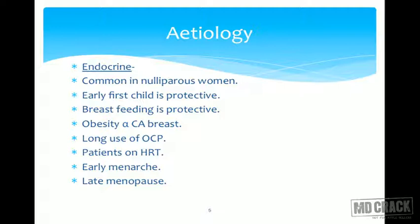CA breast is an endocrine and hormonal tumor, so understanding its endocrine background is very important. It affects nulliparous women more commonly. The correlation between menstrual history, reproductive history, and CA breast development is key. Women who bear children at a later age or breastfeed less are more at risk. Early childbirth — at age 18, 20, or 25 — is considered protective compared to having a first child at 30, 35, or 40. Breastfeeding is important not only for the child's immunity but also to protect the mother from developing breast malignancy.